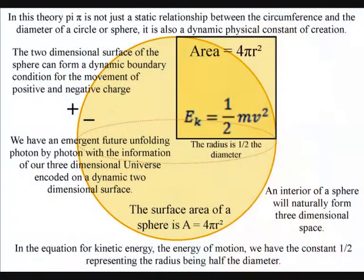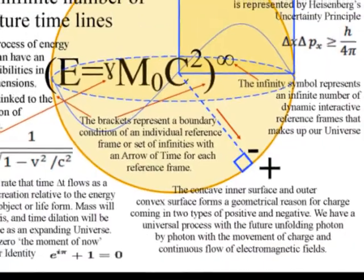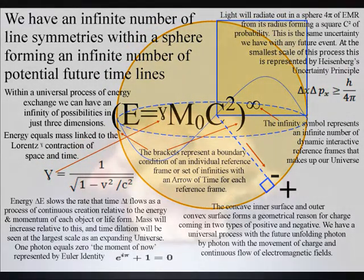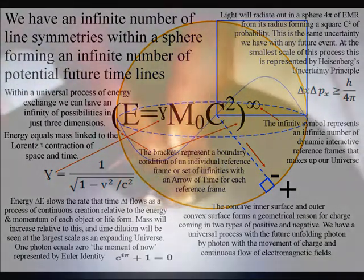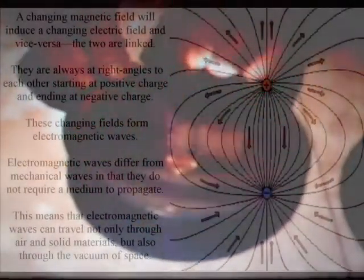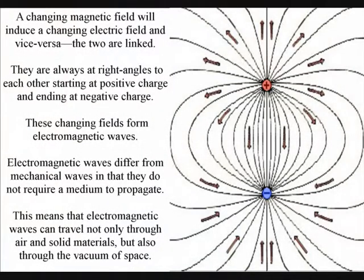The geometry of this process naturally forms three-dimensional space, with the two-dimensional surface of the sphere representing a dynamic boundary condition — the inner concave surface forming negative charge and the outer convex surface forming positive charge. This two-dimensional surface forms the holographic principle, with the information of this three-dimensional process holographically encoded on the two-dimensional surface. Photon vibrations or oscillations form the movement of positive and negative charge. The polarity of electric fields always starts at positive charge and ends at negative charge, with the direction of the field always from positive to negative charge.